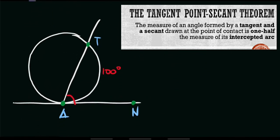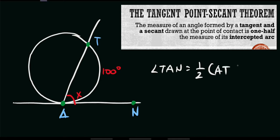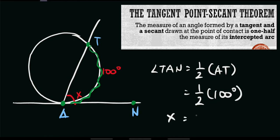Next, how about this one? We have this angle, and we are asked for angle TAN. Let's name this one as X. The value of arc AT is 100 degrees. We will use the same formula: angle TAN is equal to one half of its intercepted arc, which is arc AT. So TAN equals one half of arc AT, and AT equals 100 degrees. Therefore, this is one half of 100 degrees, and the value of X, or TAN, is equal to 50 degrees. That is our final answer for this one.